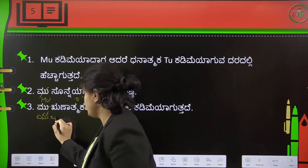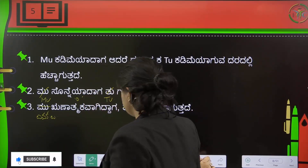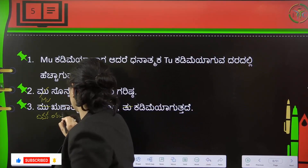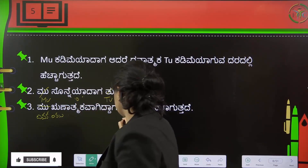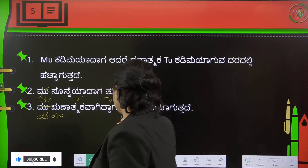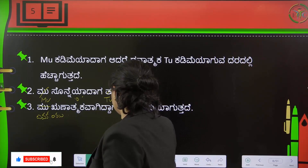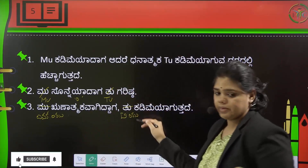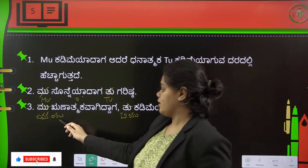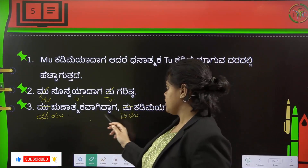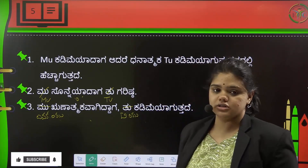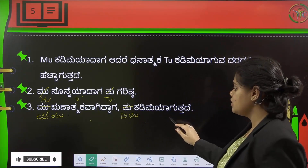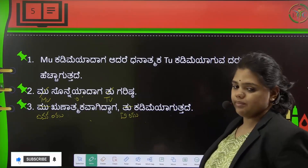So this is total utility (TU). When marginal utility (MU) is negative, TU is decreasing. TU reaches its maximization at one limit point. After that point, TU is less — it starts to fall.